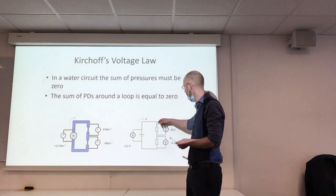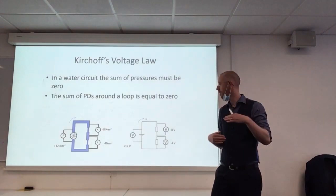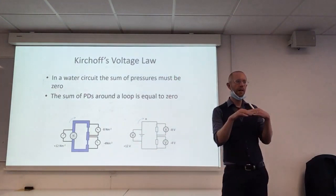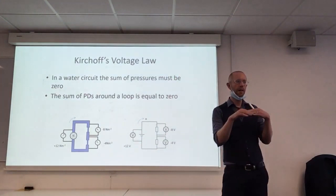Because by the time we get back here, we must be at the reference level the battery is adding the voltage to. So the battery, just by definition, adds a particular voltage—the voltage on its positive terminal compared to the reference level of its negative terminal.